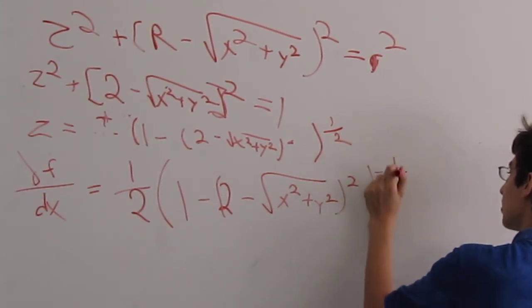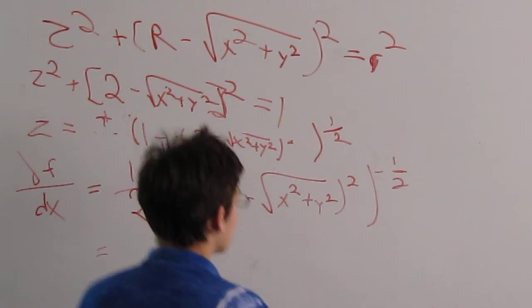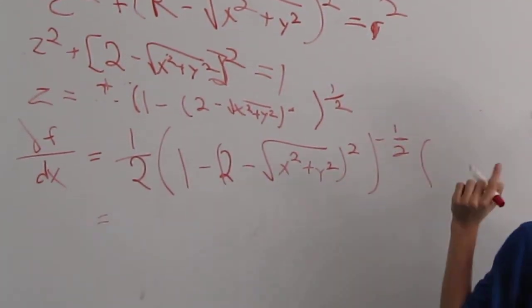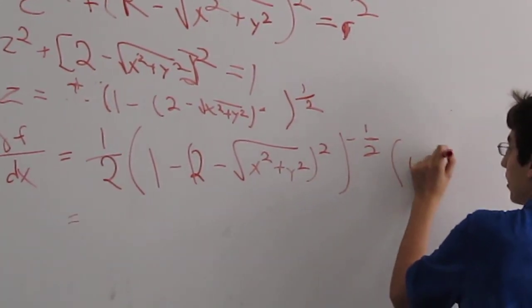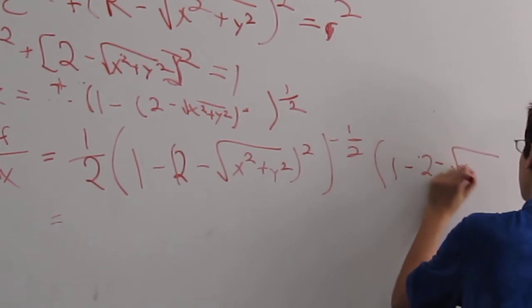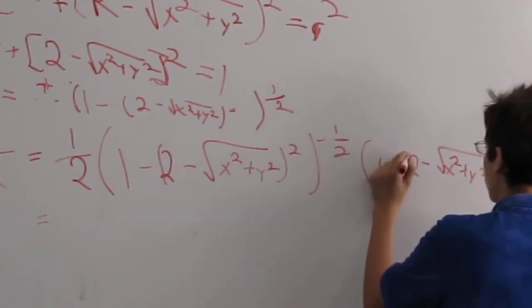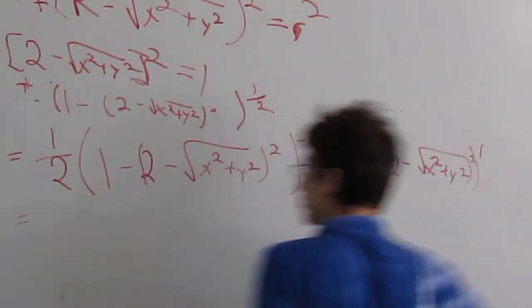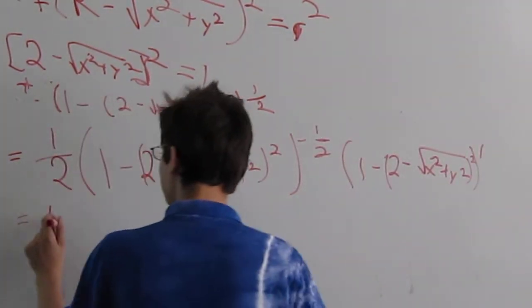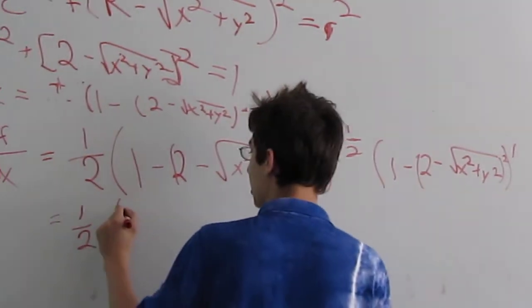Whoops. Oh, and times because of the chain rule. We can't forget the chain rule because that would be bad. The stuff on the inside, the derivative of that. Can someone erase that board over there because I'm going to need it. Thank you, lovely assistant Ausha. There are so many lovely assistants, it's hard to keep track.